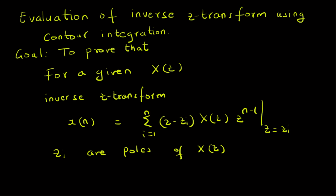So our goal is to prove this theorem: the inverse Z-transform for a given X of Z is given by the summation of residues, defined as Z minus Z_i times X of Z times Z power n minus 1, where this function is evaluated at Z equal to Z_i. These are the residues and X of n is basically the sum of them.